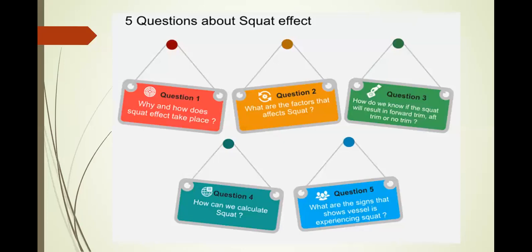Question: why and how does squat effect take place? You encounter this when you are in shallow water, and with given speed it gives you more squat because under the keel you will experience low pressure. What are the factors that affect squat? How do we know if squat will result in a forward trim, up trim, or no trim?